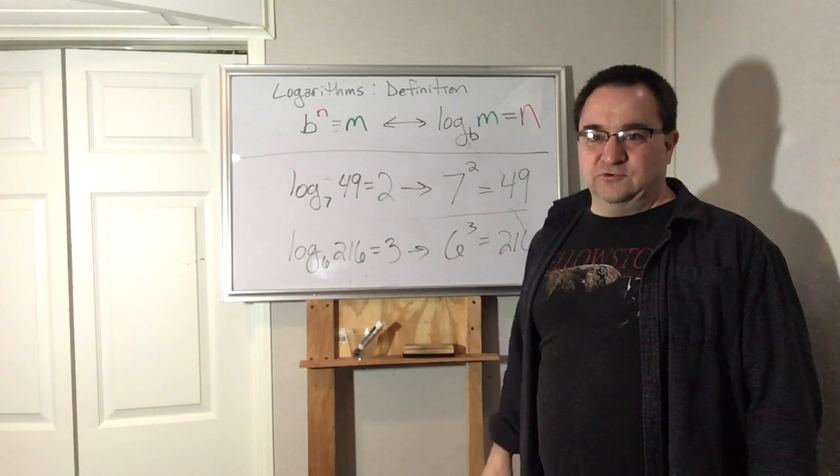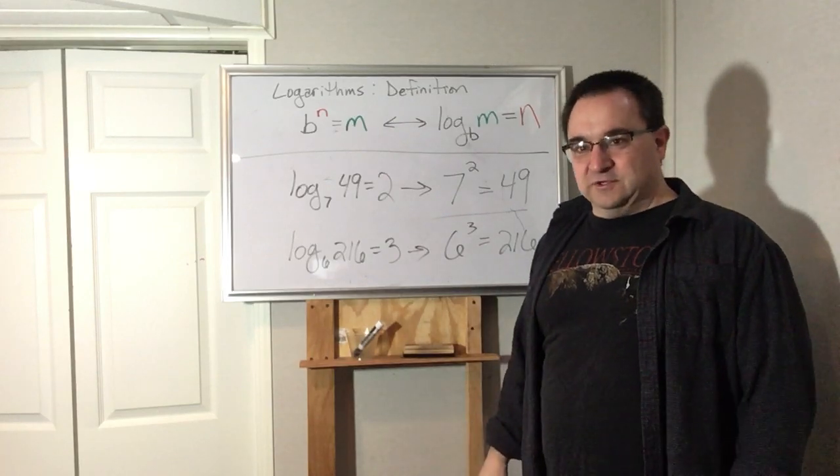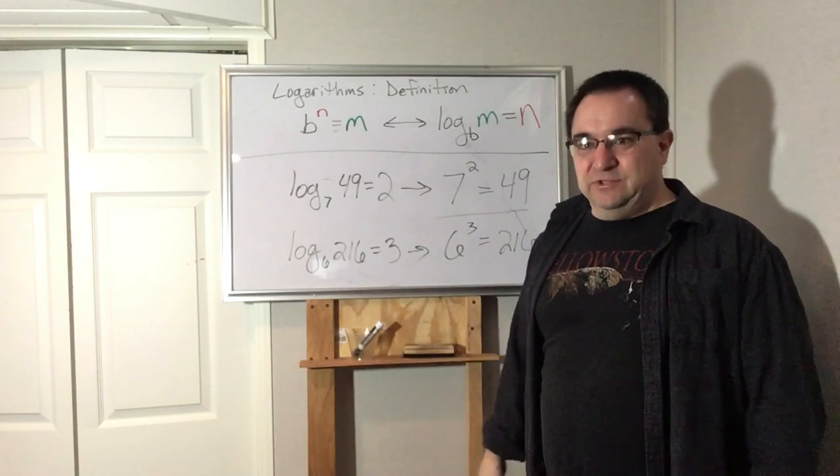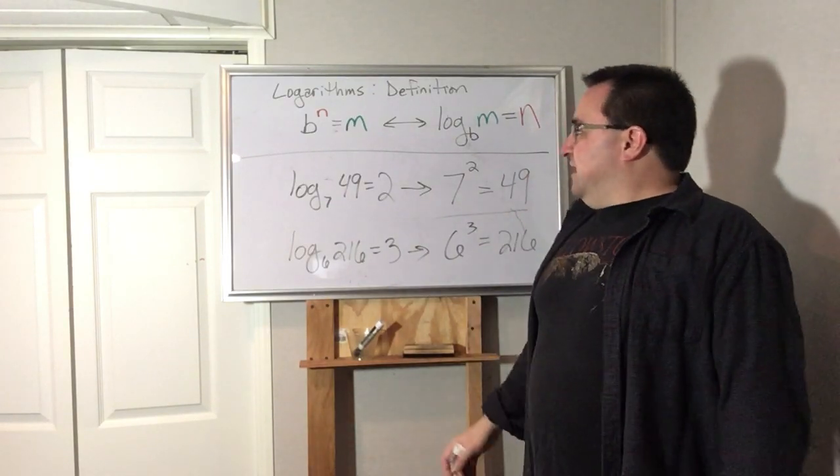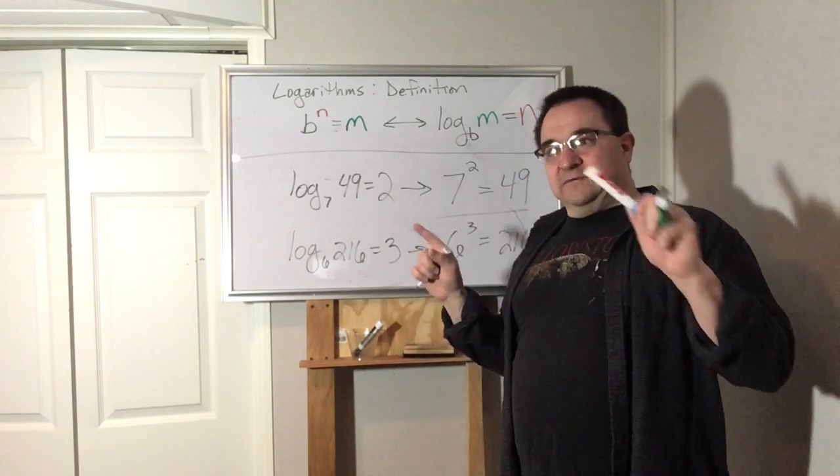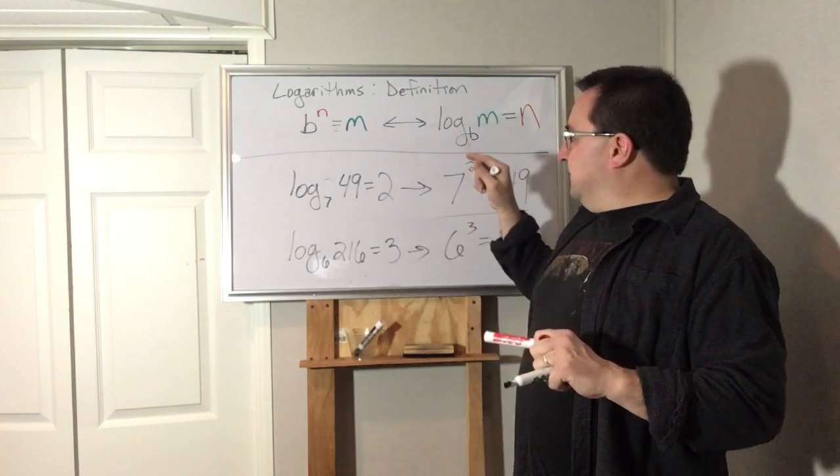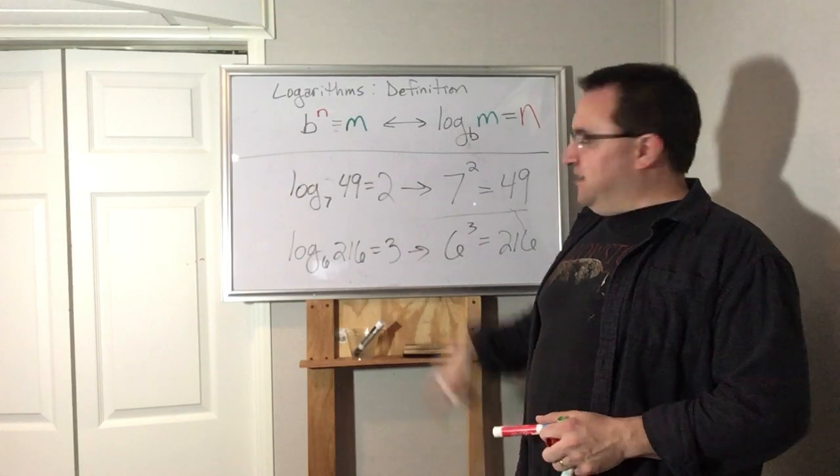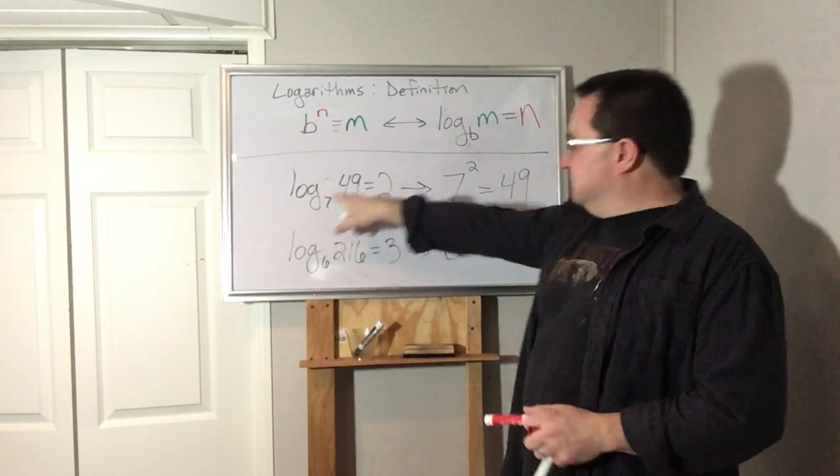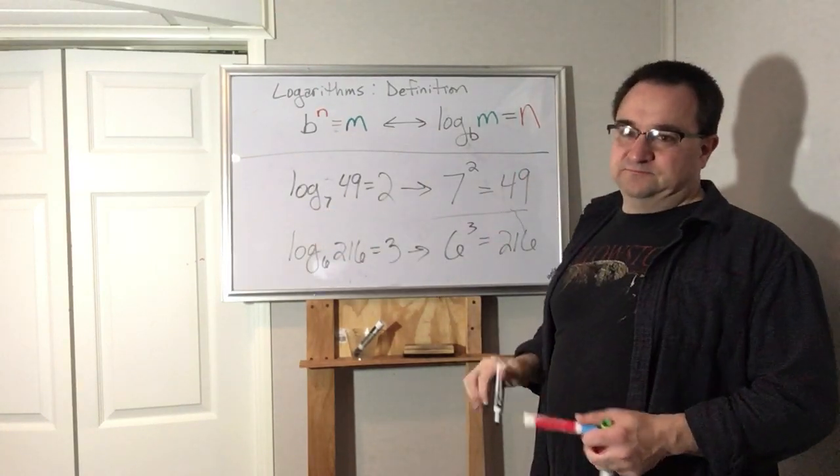If you only do one or two, it's going to be a lot more awkward. If you do a lot of them, you will get used to it. So one thing on the test is you'll have to be able to rewrite something like this as a logarithm, and you got to be able to rewrite a logarithm as an exponent.